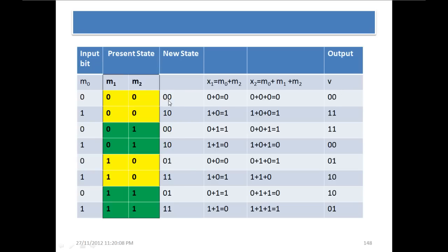How is this new state achieved? This 0 is moved to the next register — M1 is moved to M2 and M0 is moved to M1. So the new state remains 00.